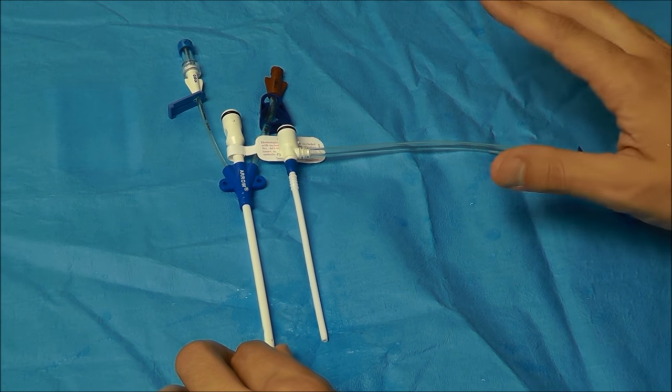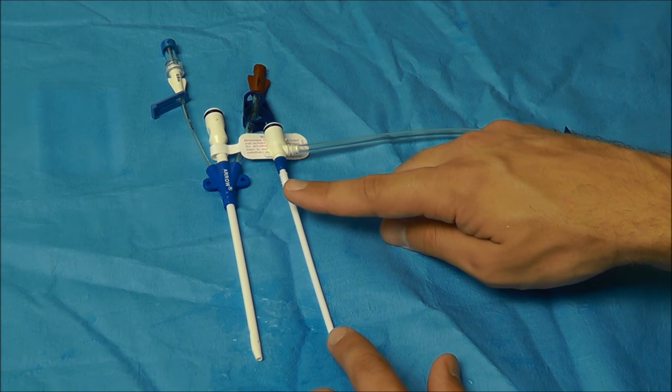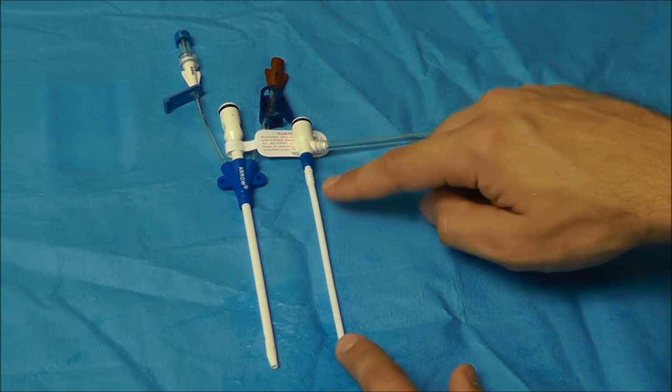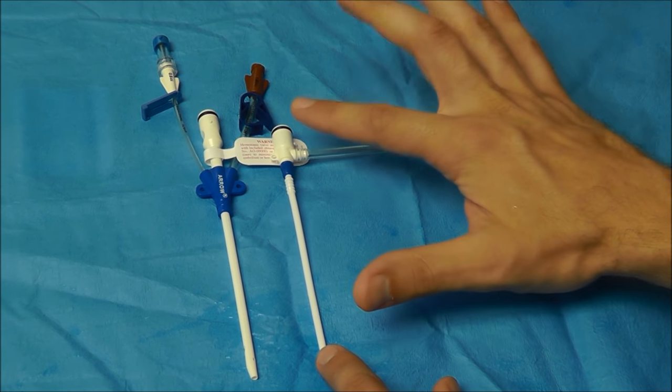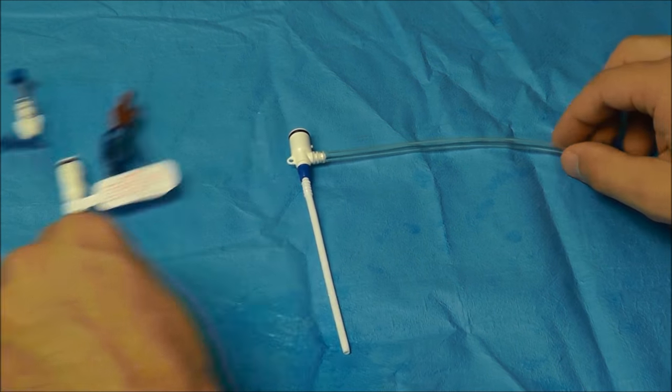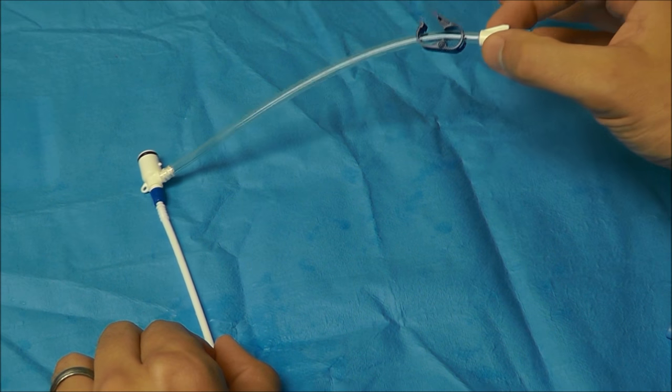But the other advantage is that it can act as a conduit for something like a pulmonary artery catheter. The disadvantage to a line with an introducer port is that they usually have less lumens. For example, on the 8.5 French cordis you can only run fluids.